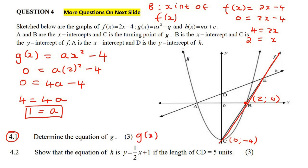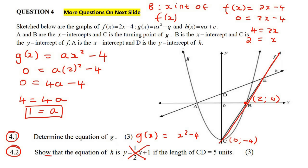So now we have the equation: X squared minus four. You don't have to put the one in the front, but you can if you'd like. This next question says show that the equation of H is Y equals to this, if the length of CD is five. Now a lot of learners think you are allowed to use this answer — you cannot use this. They said show that the equation is that, so we're going to try to get this as the answer, but you can't use it.